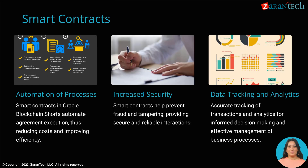One of the key features of Oracle Blockchain Shorts is the ability to create and execute smart contracts. Smart contracts are self-executing agreements encoded on the blockchain that automate business processes. By automating agreement execution, smart contracts reduce operational costs and improve efficiency. They also enhance transaction transparency and reliability.